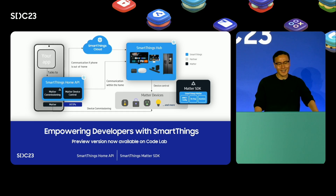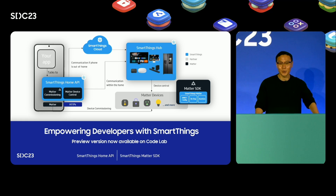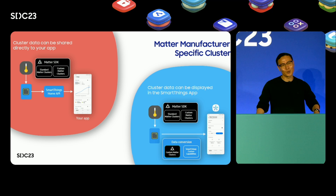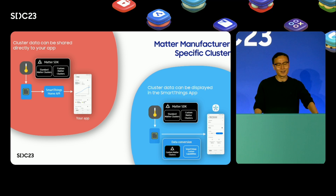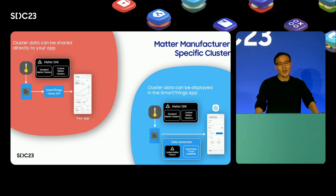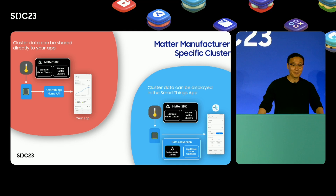Our new SmartThings Home API lets device makers use SmartThings infrastructure. The Home API lets you create apps that can control devices locally and remotely without needing to build your own cloud or Matter controller. You will be able to control devices connected to SmartThings hubs directly from your app. The SmartThings Home API will also allow custom features — in Matter these are called manufacturer-specific clusters — and the Home API will allow you to pass these features through to your app, and also enable them to show up in the SmartThings app if those features map to a SmartThings supported capability.